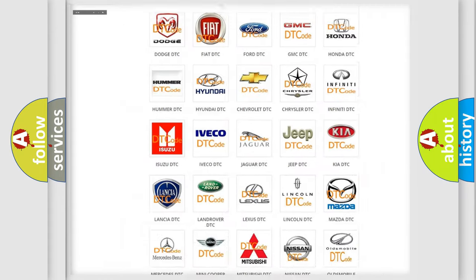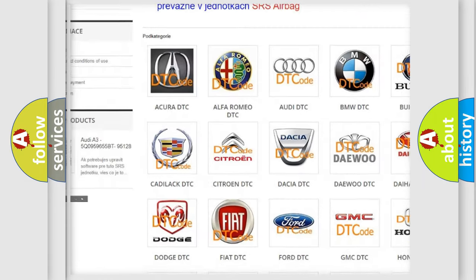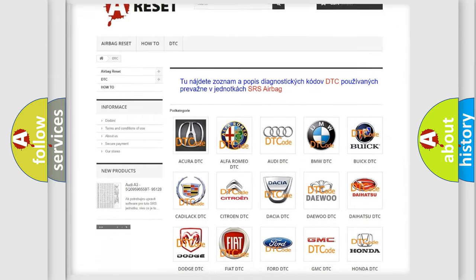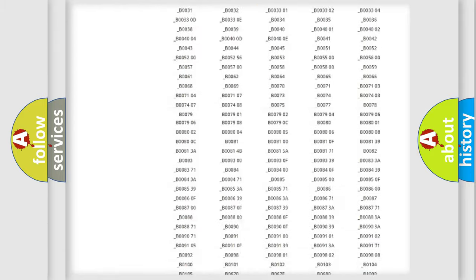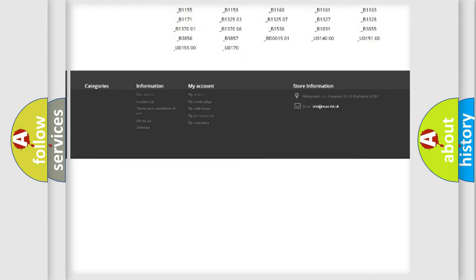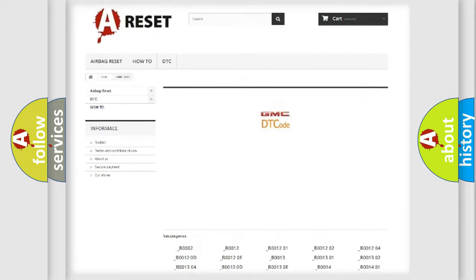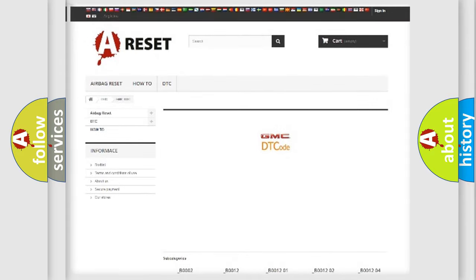Our website airbagreset.sk produces useful videos for you. You do not have to go through the OBD2 protocol anymore to know how to troubleshoot any car breakdown. You will find all the diagnostic codes that can be diagnosed in GMC vehicles, and also many other useful things.